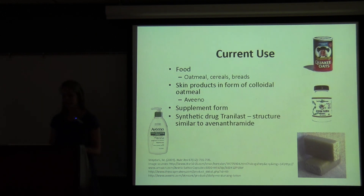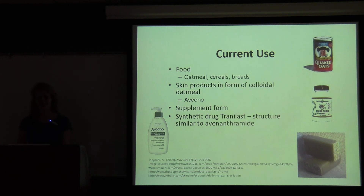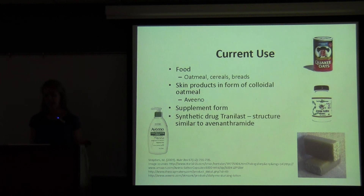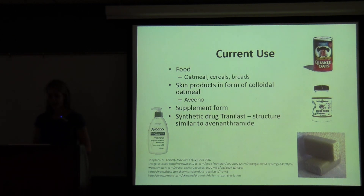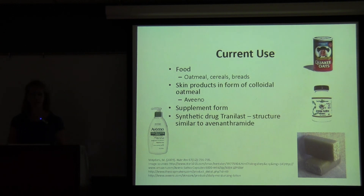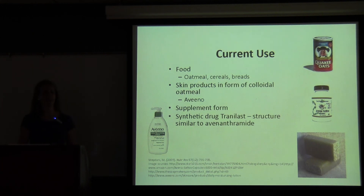In conclusion, the uses of Avena sativa have definitely evolved throughout the centuries since it was first used as fodder and animal bedding. Now its common uses are in foods and skin diseases. It's a healthy part of the diet, it's definitely accessible for everyone to use, and it's grown widely throughout the world. The wide variety of health benefits from the beta-glucans and avenanthramides have definitely become popular recently, and I think that there are still more benefits to be discovered.